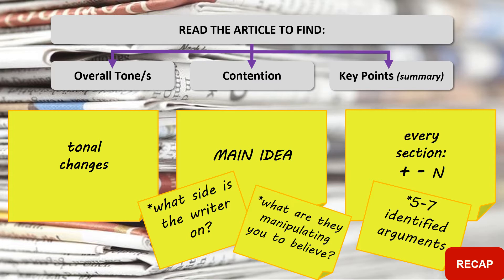Then after we've figured out those two things, we read it through another time. This time we break it into sections and we put a positive, negative, or neutral label on each, noting what or who they are being positive, negative, or neutral about. These summary points help us lead into finding five to seven identified arguments that support the contention. It's really important that we're able to do those summary points to find those identified arguments.